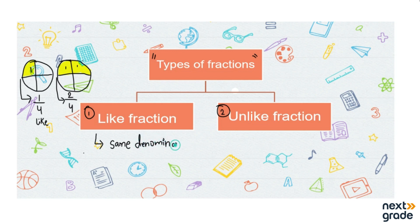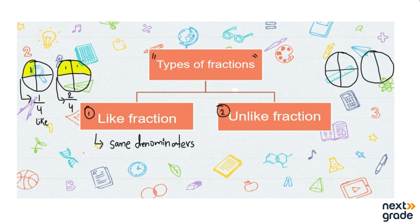Let's take another example. This time we have two circles. The first circle has four portions and the second circle has six portions. In the first circle, one portion is taken — shown in yellow. In the second circle, four portions are taken. The fraction of the first circle will be one by four — one colored out of four total parts.